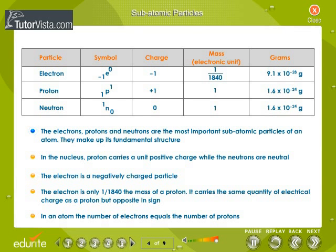The electrons, protons and neutrons are the most important subatomic particles of an atom. In the nucleus, proton carries a unit positive charge, while the neutrons are neutral. The electron is a negatively charged particle. The electron is only 1 by 1840 the mass of a proton. It carries the same quantity of electrical charge as a proton, but opposite in sign. In an atom, the number of electrons equals the number of protons.